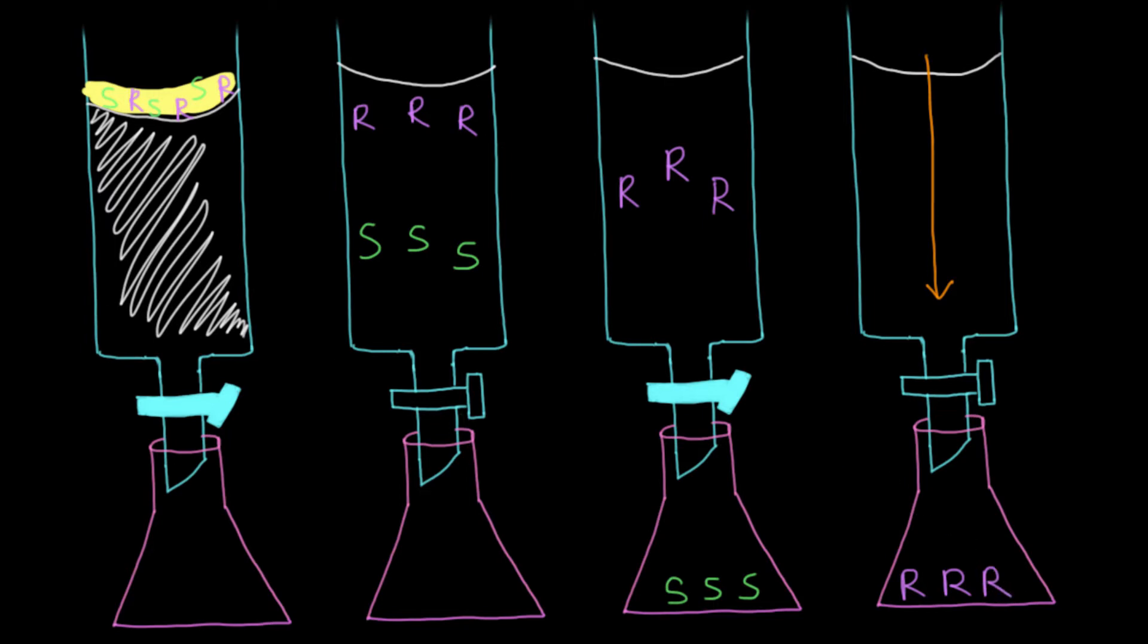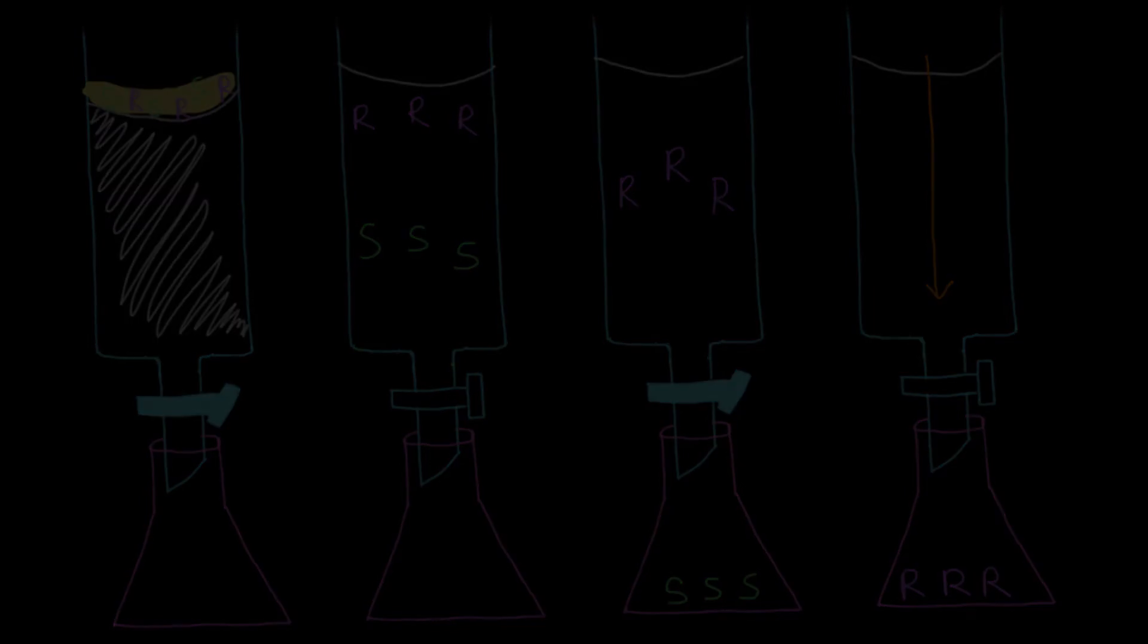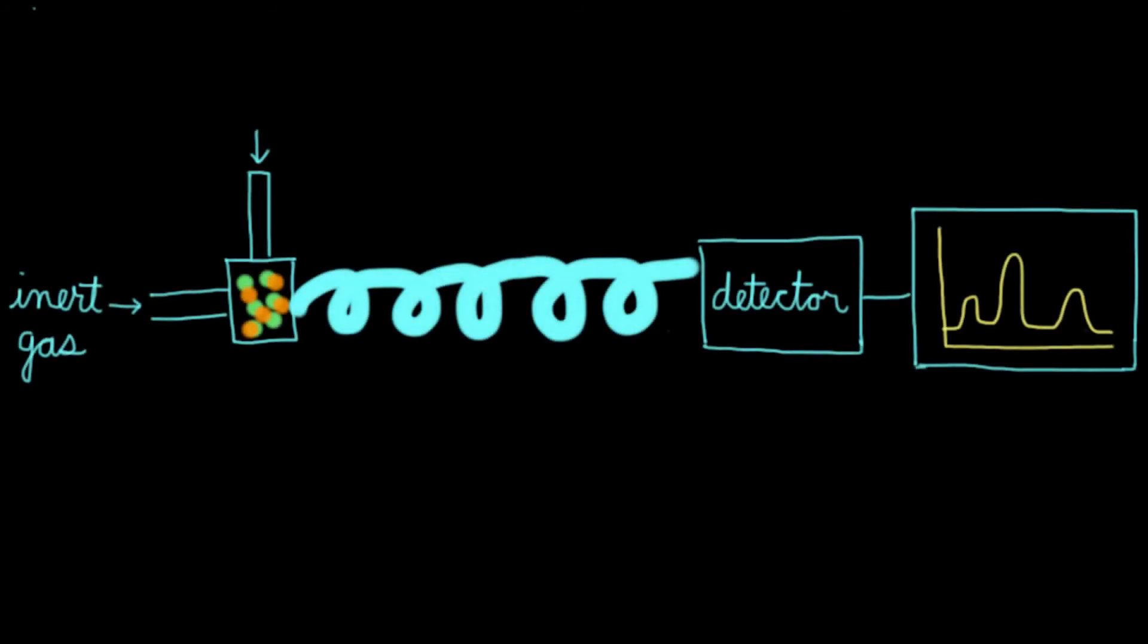And there you've done a successful chiral resolution. The same principle can also be applied to gas chromatography. Let's quickly review how gas chromatography works. You insert your sample in here, a gas flows through, and then it goes into this long tube that contains the stationary phase and mobile phase and goes to the detector.